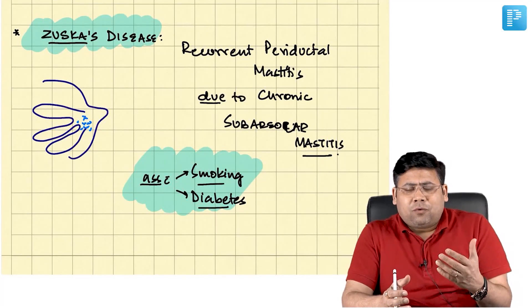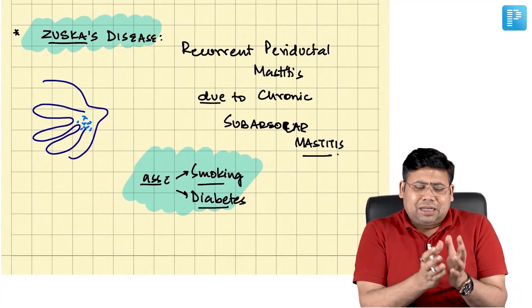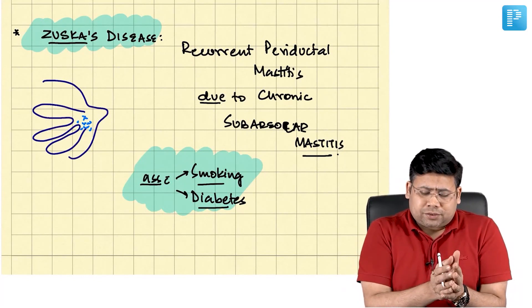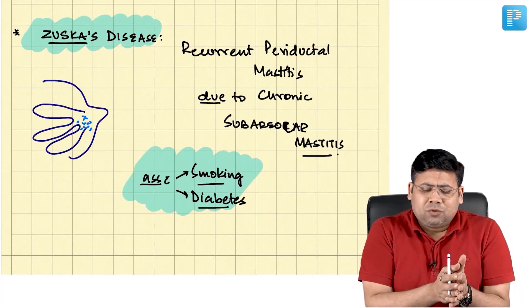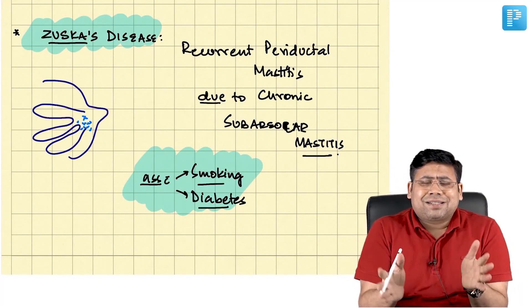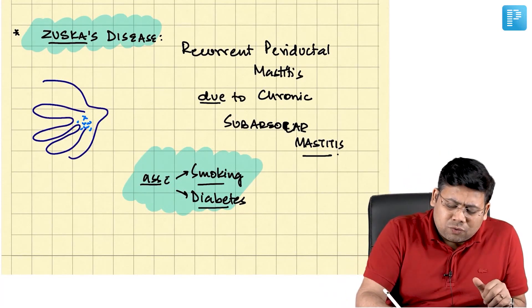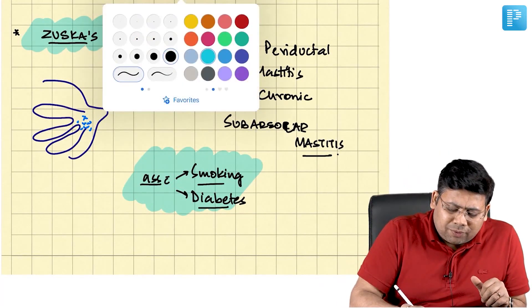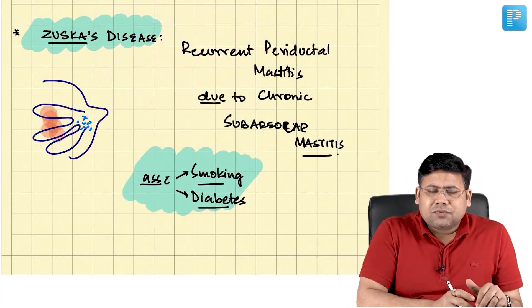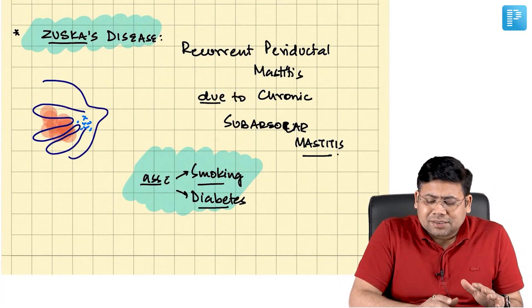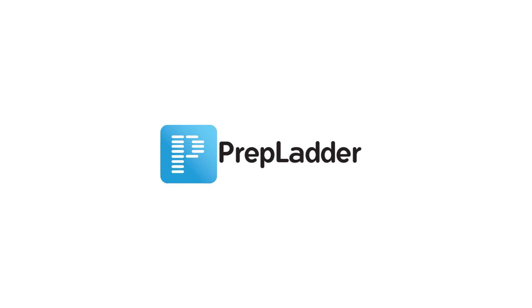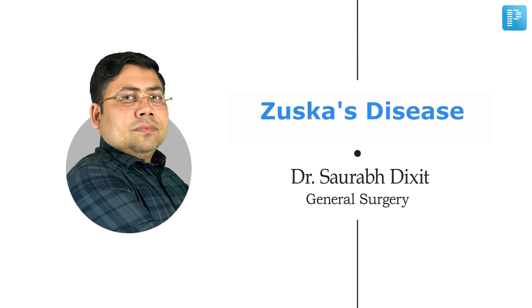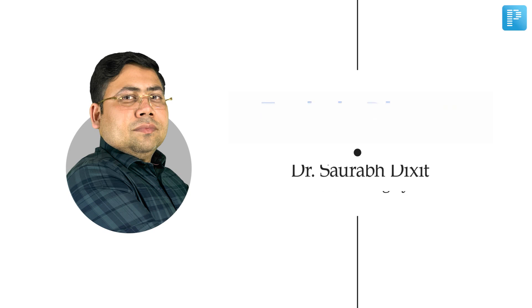Repeated use of antibiotics converts this abscess into a cold abscess. Necrosis is a beautiful, excellent culture media, and this causes inflammation to the breast again and again — that is why you have recurrent periductal mastitis.